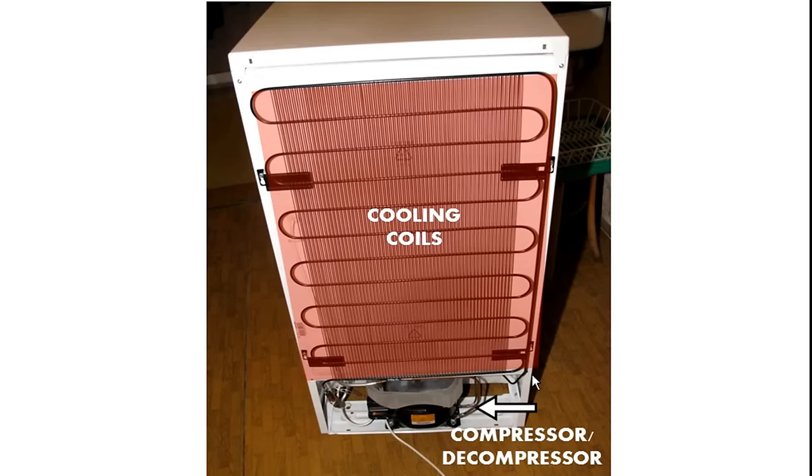Inside is an identical set of cooling coils. So hot compressed gas moves through these outer coils and cools down. And then it hits the decompressor and cold gas flows through the inside, cooling everything on the inside of the refrigerator down.